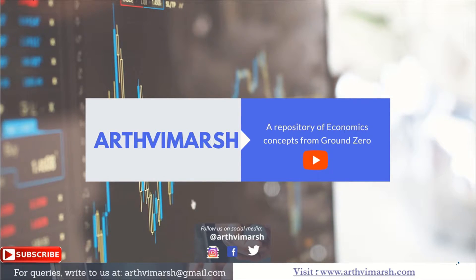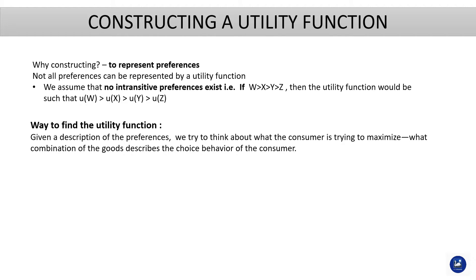Welcome back to Arthavimarsh. So far we have been talking about the monotonic transformation of utility functions. Now let's understand how we construct our utility function and why we are constructing it. What we are essentially trying to highlight with the help of a utility function is the mapping of preferences — our preference ordering. This is the purpose it serves. Now, all preferences cannot be represented by a utility function.